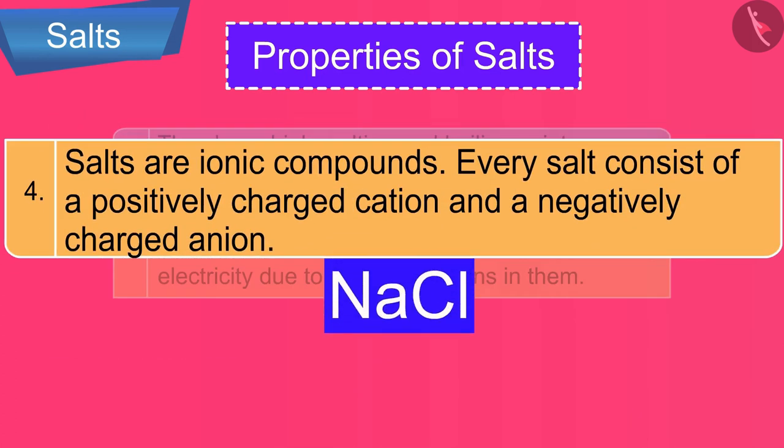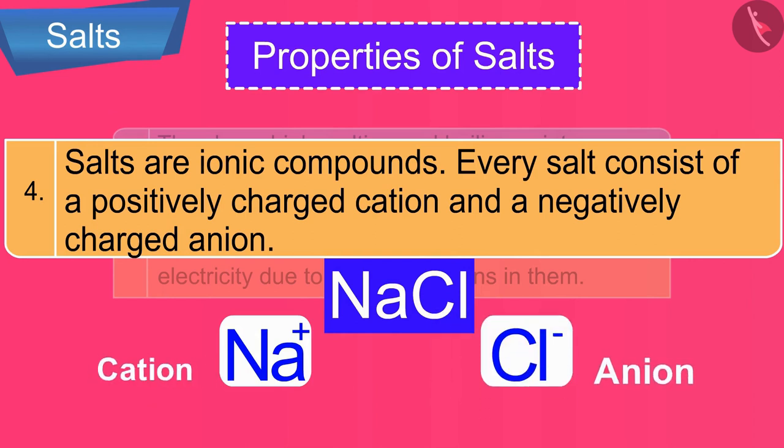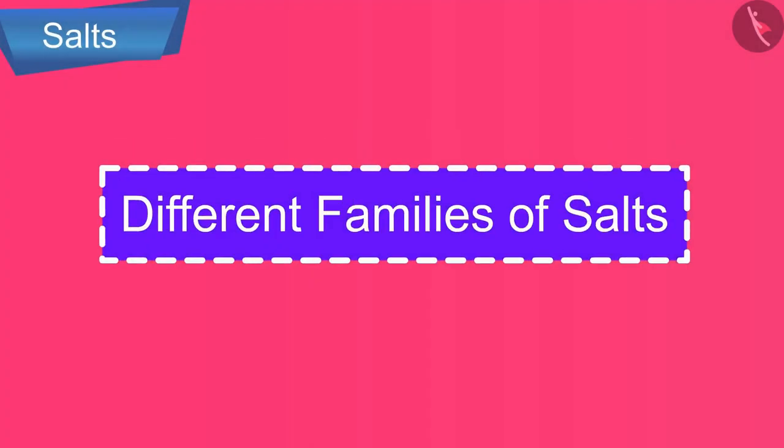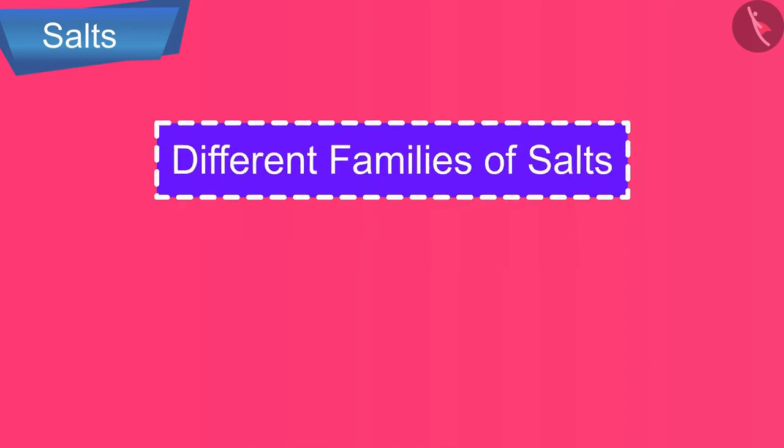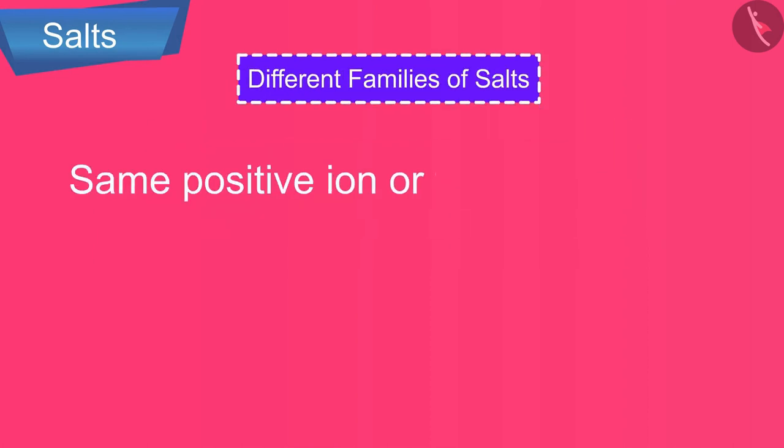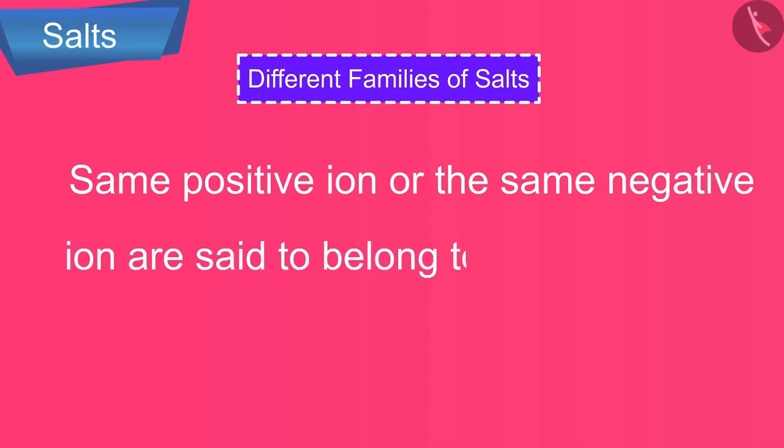For example, a salt NaCl has Na+ cation and Cl- anion. Now let us discuss the different families of salts. The salts having the same positive ion or the same negative ion are said to belong to a family.